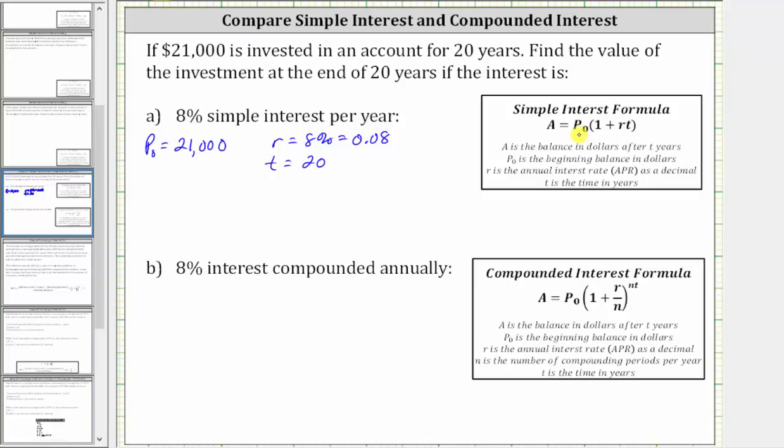The amount after 20 years, A, is equal to P sub zero, which is $21,000, times the quantity one plus R times T, which is 0.08 times 20.